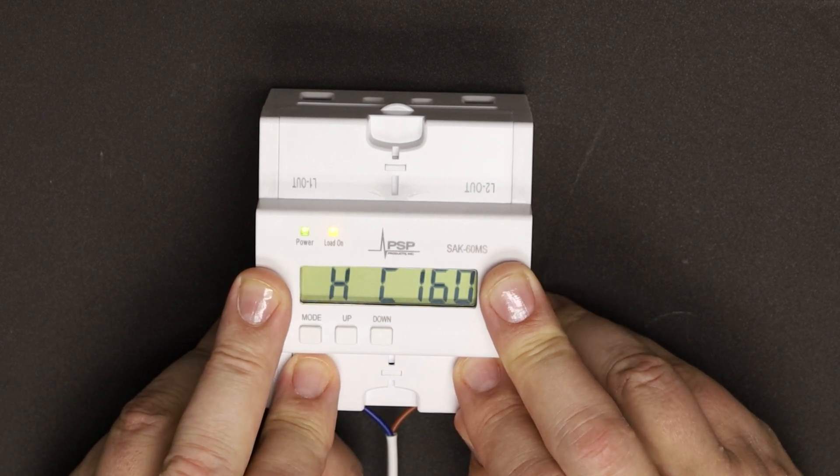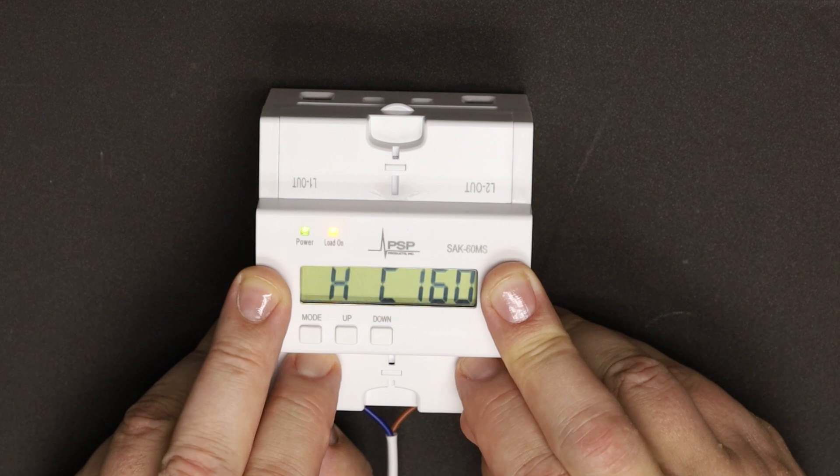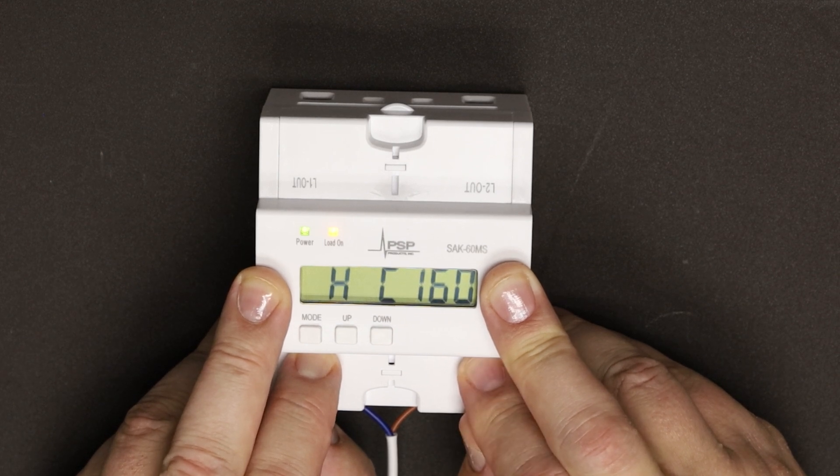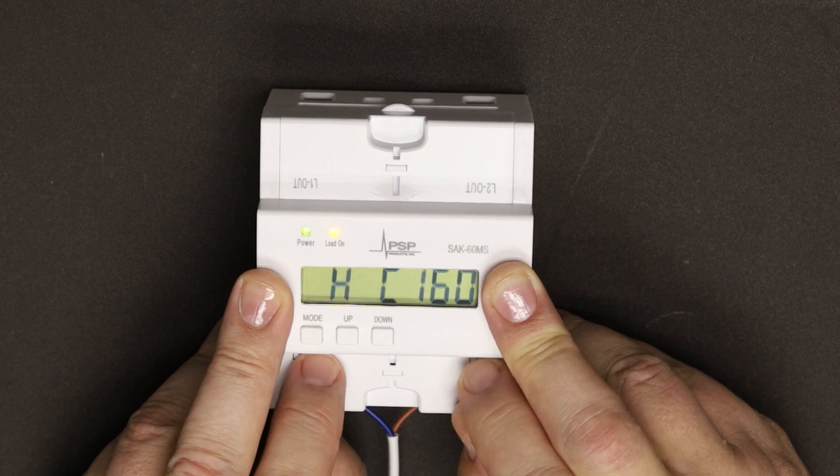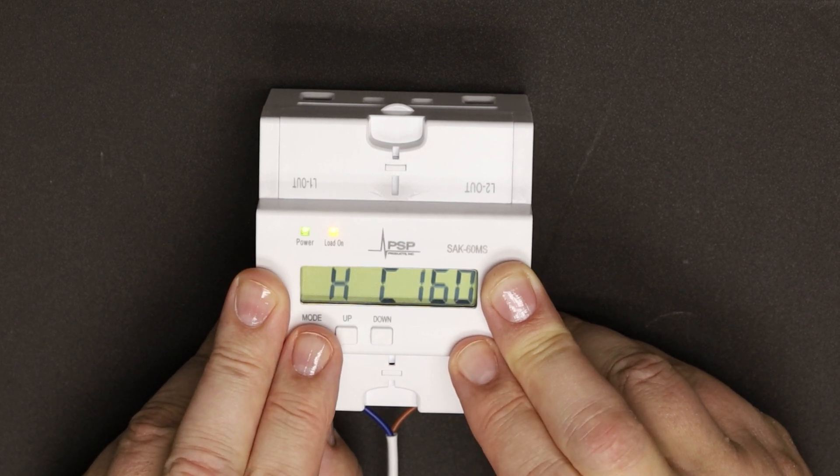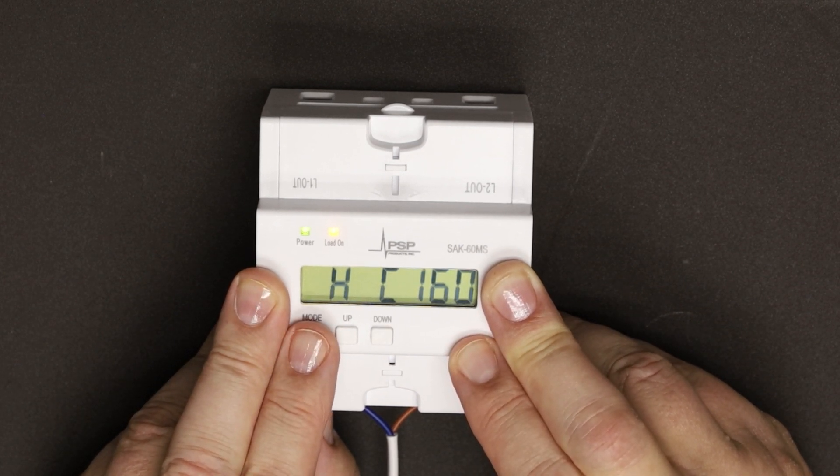HC is the high current set point, or the panel ampacity at which it will drop out the load. I'm assuming a 200-amp panel, and I set HC to 80% of that, or 160 amps.